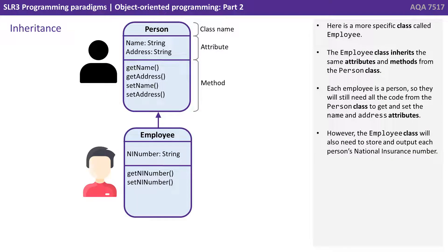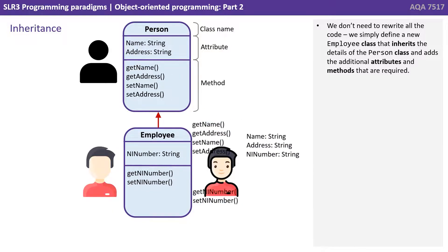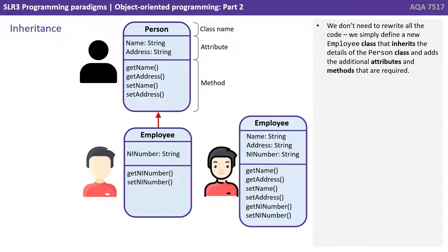Here is a more specific class called employee. The employee class inherits the same attributes and methods from the person class. Each employee is a person, so they will still need all the code from the person class to get and set their name and address attributes. However, the employee class will also need to store and output each person's national insurance number. We don't need to rewrite all the code — we simply define a new employee class that inherits the details of the person class and then adds the additional attributes and methods required.